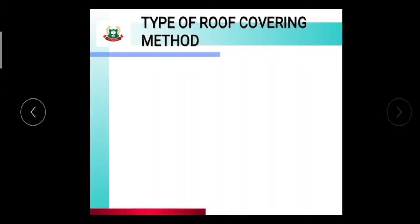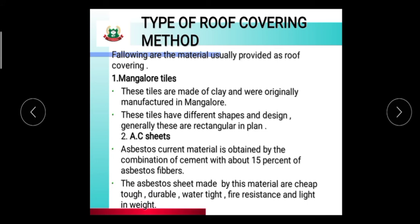Type of roof covering methods. Following are the materials usually provided as roof covering: first, Mangalore tiles. These tiles are made of clay and were originally manufactured in Mangalore. These tiles have different shapes and designs; generally these are rectangular in plan. AC sheets: asbestos cement material is obtained by the combination of cement with about 15% of asbestos fiber. The asbestos sheets made by this material are cheap, durable, watertight, fire resistant, and light. Various AC sheets should be used in roof coverings.